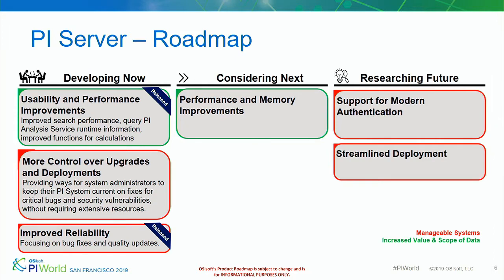For Pi server, the focus on security and reliability has been going on for a long time, but for this last release it was the main focus. We did a lot of quality updates to Pi server — bug fixes, performance, usability, and reliability. Those two aspects you see were released with Pi server 2018 SP2. Going forward, we're looking at how we can give you updates to critical bugs and security issues in the form of patches, so that while you keep your Pi server up to date on the critical aspects, you don't have to allocate more resources — and you can put your resources where your projects need to get done.